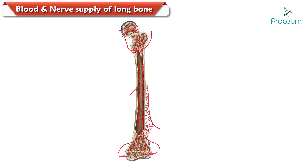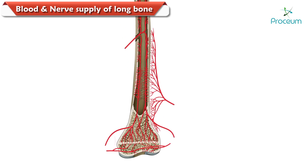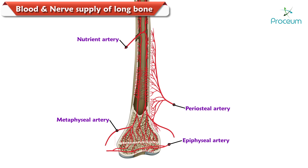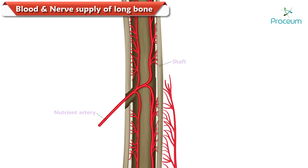The long bone is supplied by four sets of arteries: number one, the nutrient artery; number two, the periosteal arteries; number three, metaphyseal arteries; and number four, the epiphyseal arteries. Let's take a look at the nutrient artery.